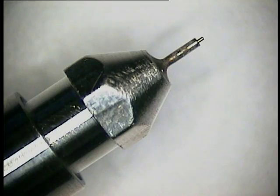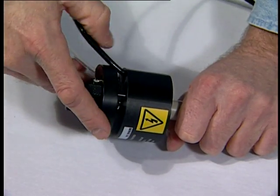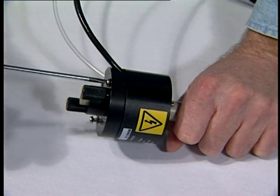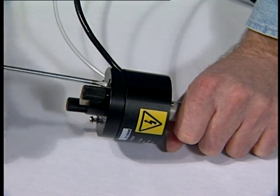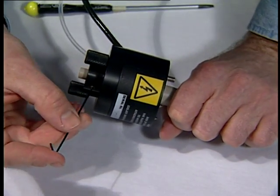Replace the probe end cover and secure with the two slotted screws. Tighten the grub screw to clamp the LC union in place.